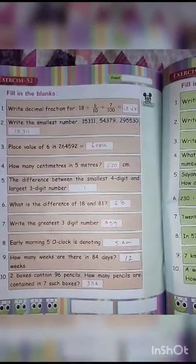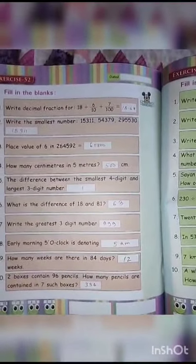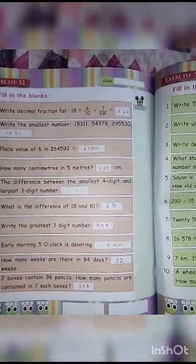2 boxes contain 96 pencils. How many pencils are contained in 7 such boxes? 336.